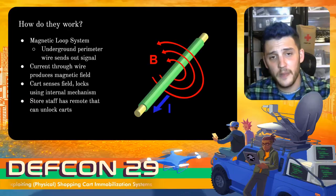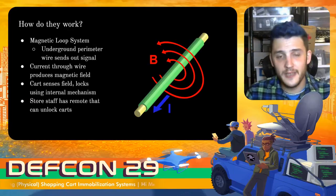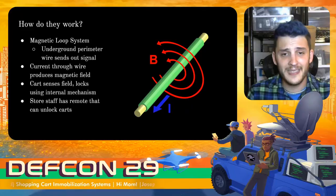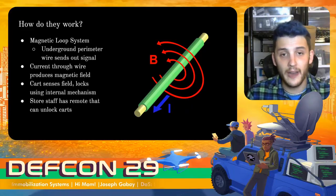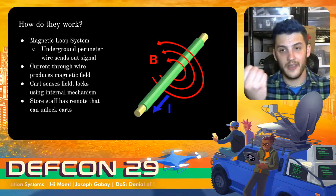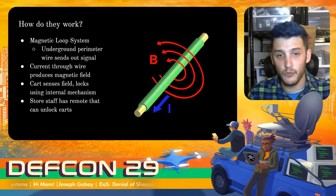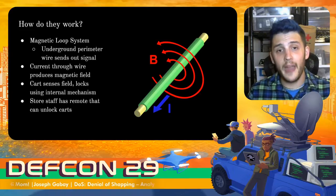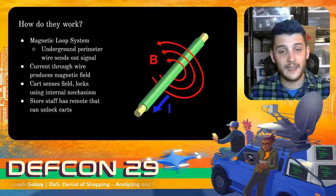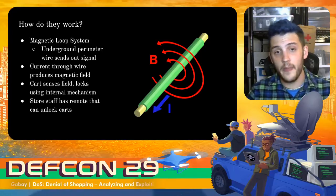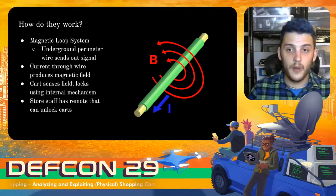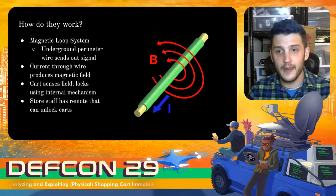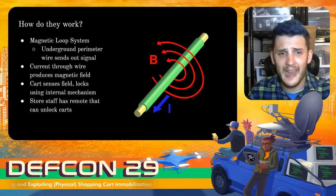So how does this system work? It's a magnetic loop system where there's an underground perimeter wire sending out a signal. When you push current through a wire, it produces a magnetic field in a radius around it, according to the right-hand rule. There is a buried wire around the perimeter of the parking lot sending out this signal. When the cart crosses over it, it senses it and uses an internal mechanism to lock the wheel. Store employees have a remote that they can use to unlock it and bring it back into service.